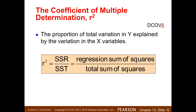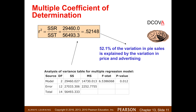Now we get into something called the coefficient of multiple determination. The R-squared will be provided in the StatCrunch output. It's the percent of variation in Y explained by the variation in the X variables, and it's found as the sum of squares for the regression divided by the sum of squares total. From the ANOVA table: SSR is 29,460, sum of squares total is 56,493.3, and dividing gives 0.52148. So 52.1% of the variation in pie sales is explained by the variation in price and advertising.